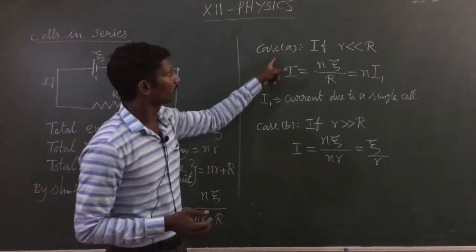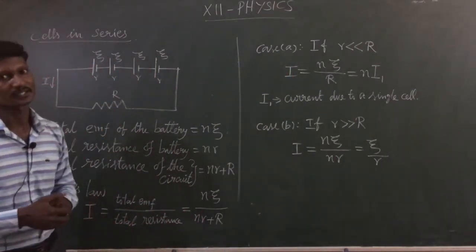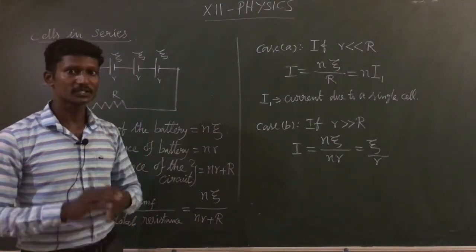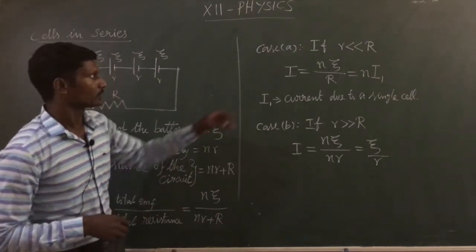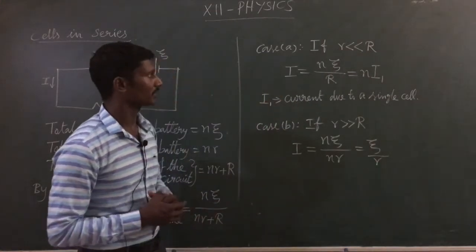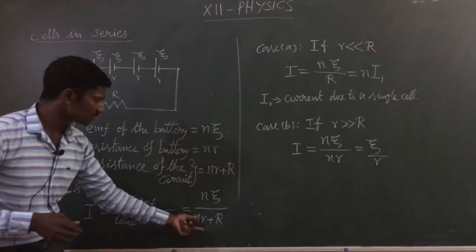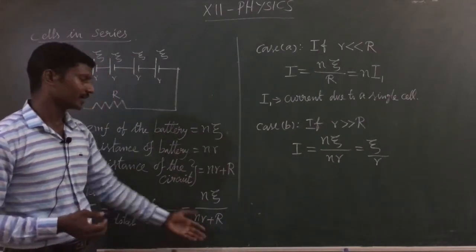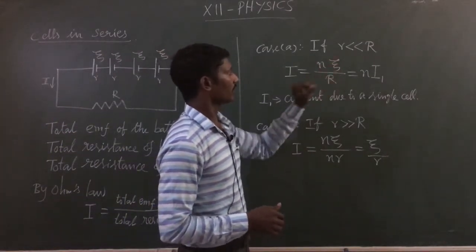From that equation, we discuss case 1 and case 2. Case 1: the internal resistance is very very small compared to the external resistance. This means the cell is a freshly prepared, new cell — it has very low internal resistance. So Nr is negligible. Therefore, I = Nψ / R.